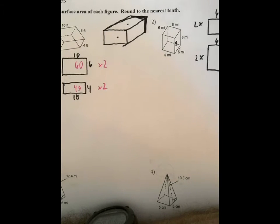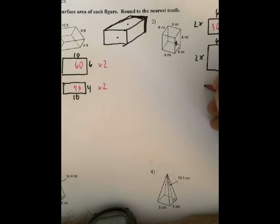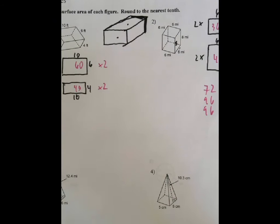Also 6 by 8, and there's also two of those. So we add those together, that's 36 times 2 is 72, 6 times 8 that's 48 times 2 is 96, and then also 48 times 2 is 96.